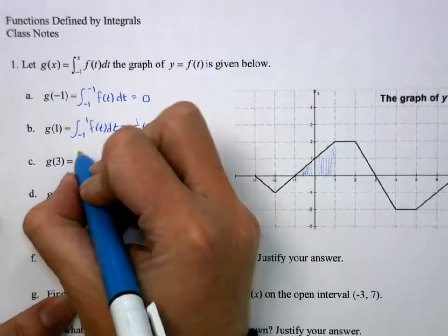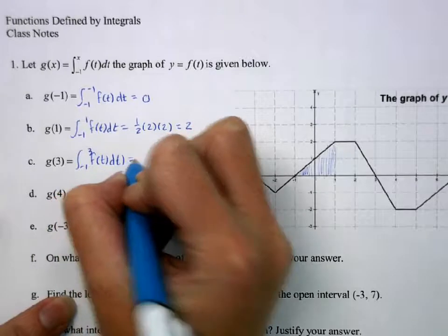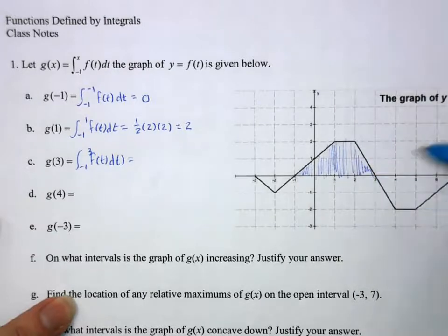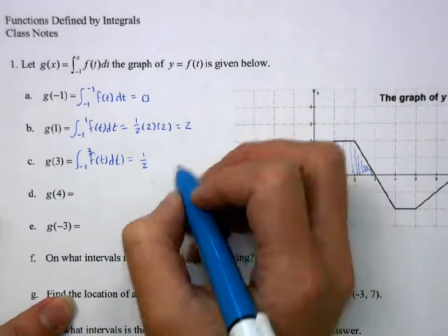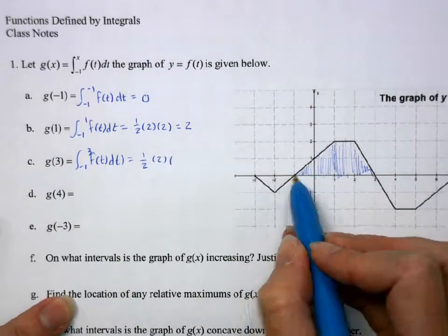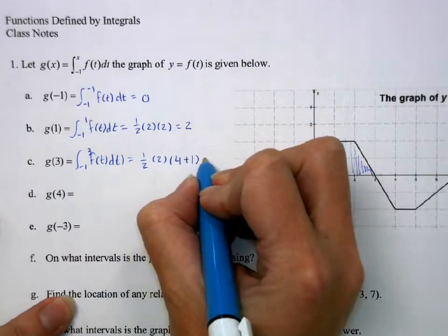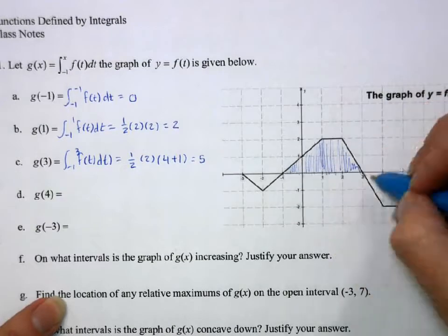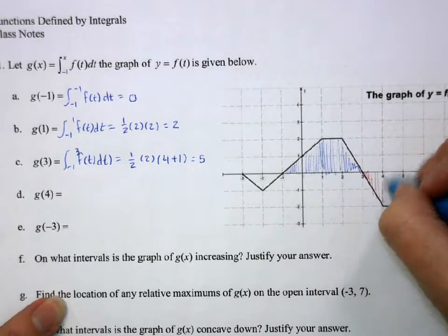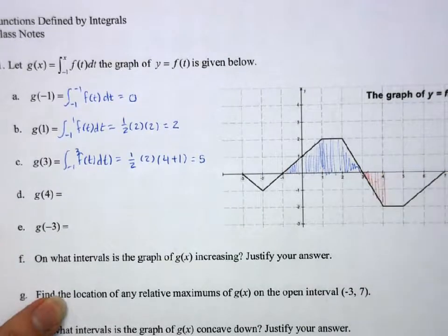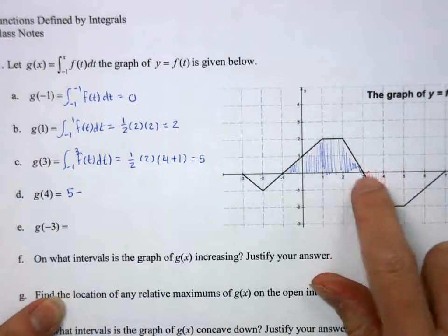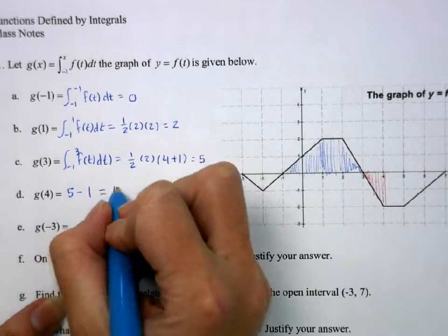g of 3 is the integral from negative 1 to 3 of f of t. Again, this is area — from here to here, that's a trapezoid. One half, the height is 2, and the two bases are 4 and 1, so that's 5. g of 4 is the integral from negative 1 to 4. We take our previous answer 5, and subtract that area below the x-axis, which is one half times 1 times 2, so just 1. That gives us 4.